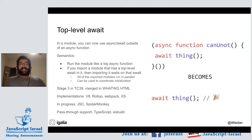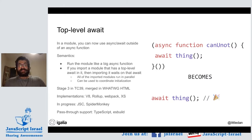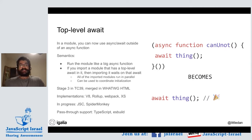This proposal is at stage three in TC39 and it's merged in HTML. There were two different parts to the specification. There are several implementations that are complete, more in progress. Some implementations actually know how to execute this code or transpile it away, whereas other implementations just know how to parse it and allow it through. There's a lot of different things in the JavaScript toolchain that have to have some kind of support for a language feature to really be usable everywhere.